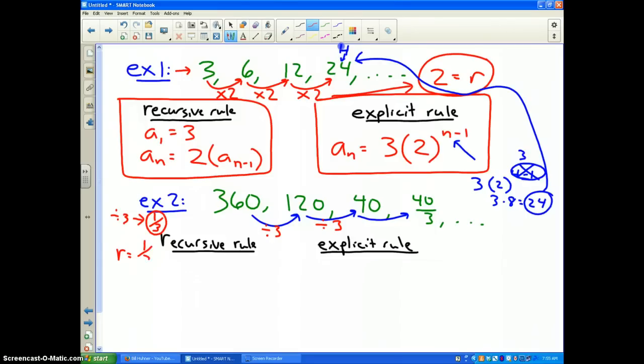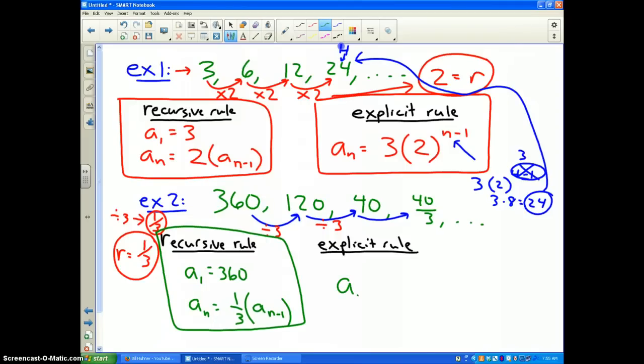So my recursive rule for 360, 120, 40, 40 thirds, etc. The first term is 360 and my nth term is equal to the common ratio one third times the prior term, a sub n minus 1. Very simple.